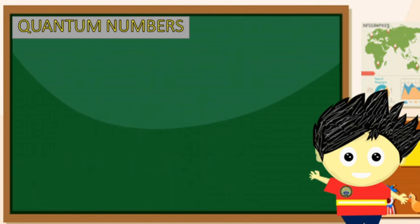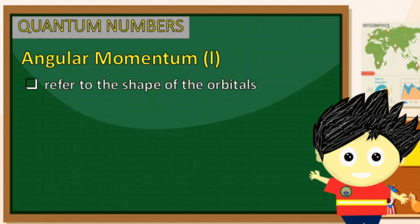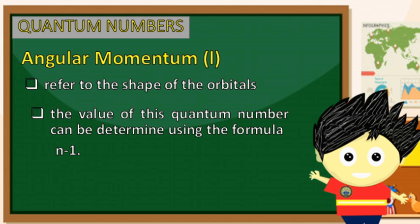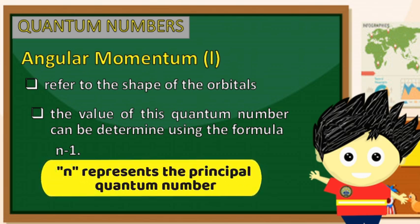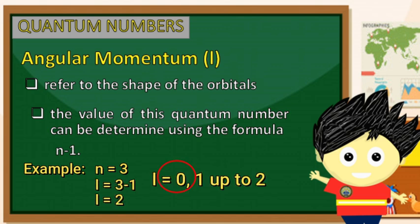Ang pangalawang quantum number ay tinatawag nating angular momentum, na nire-represent ng small letter L. Ito ay kilala din sa tawag na azimutal quantum number. Ito ay tumutukoy sa shape ng mga orbitals. Ang value naman ng quantum number na ito ay maaari nating makuha sa pamamagitan ng formula na N minus 1, kung saan ang N ay nagre-represent sa principal quantum number. Halimbawa, kung ang isang elektron ay may N value na 3, ito ay magkakaroon ng L value mula sa 0, 1, and 2 na naging resulta ng ating formula. Muli, maaari itong magkaroon ng value mula 0 hanggang sa naging resulta ng formula na N minus 1.